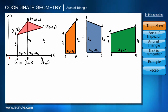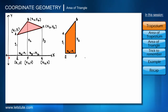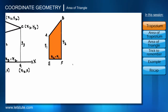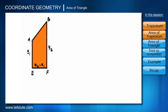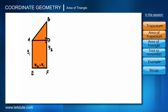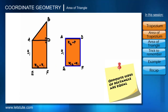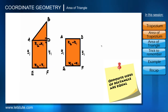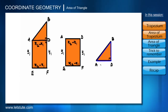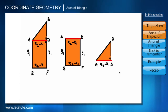Now let's find the area of the first trapezium, ABFE. To do this, let's draw a perpendicular AD on BF. This splits the trapezium into two parts: a rectangle ADFE, where AD is x2 minus x1 and DF is y1, and a right-angle triangle ADB, where AD is again x2 minus x1.